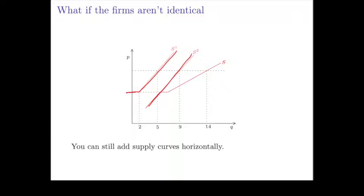So the market supply curve is just going to follow firm 2's supply curve at any price lower than the price where firm 1 becomes active.